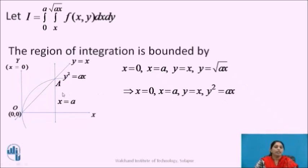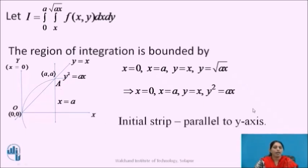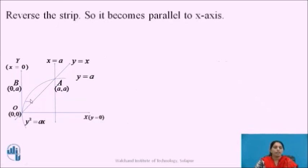The parabola intersects the straight line at point A, whose coordinates are (A, A). The initial strip is parallel to the y-axis, as y is expressed as a function of x. The region of integration lies between x equal to 0 and x equals to A, with the strip parallel to the y-axis, whose lower end is on the straight line y equal to x and upper end is on the curve y square equal to AX.